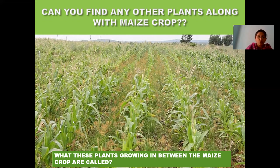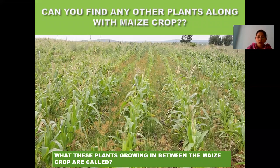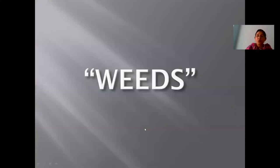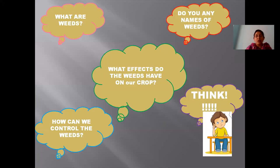Here you can find an image where you can see the crop of maize. Can you find any other plants growing along with these maize plants? Just observe. What are these plants growing in between the maize crop called? So to know more about weeds, we should have some questions.